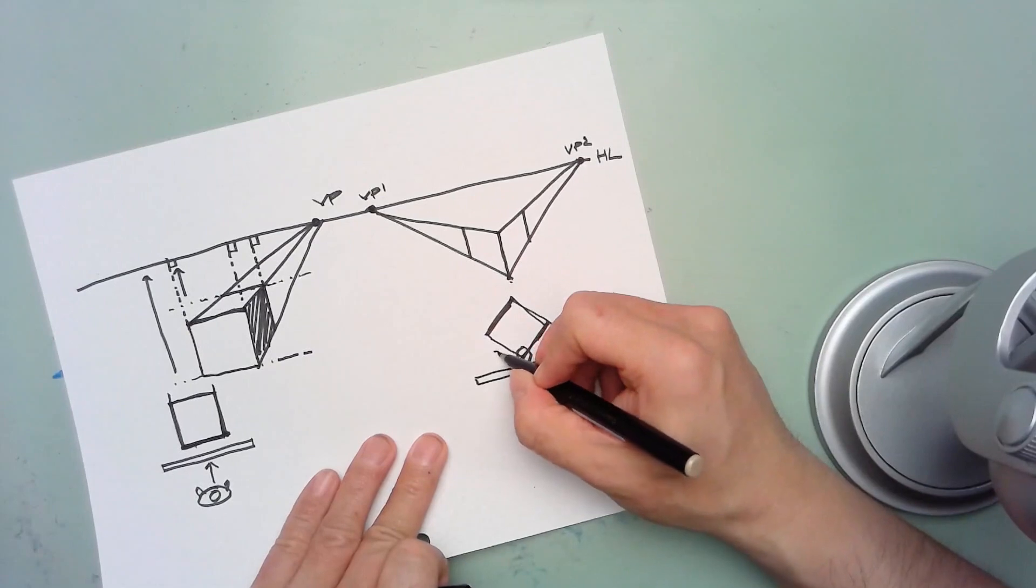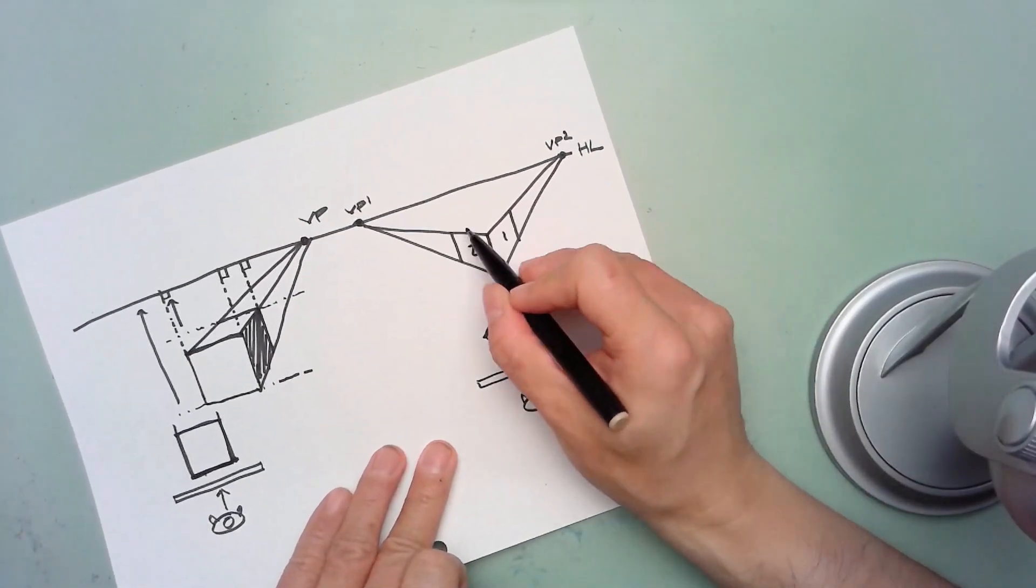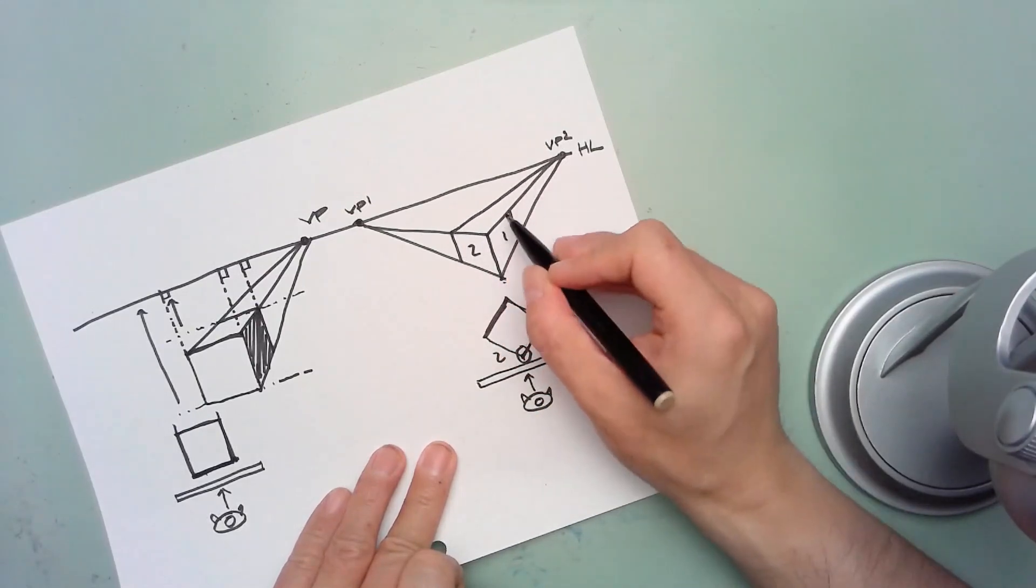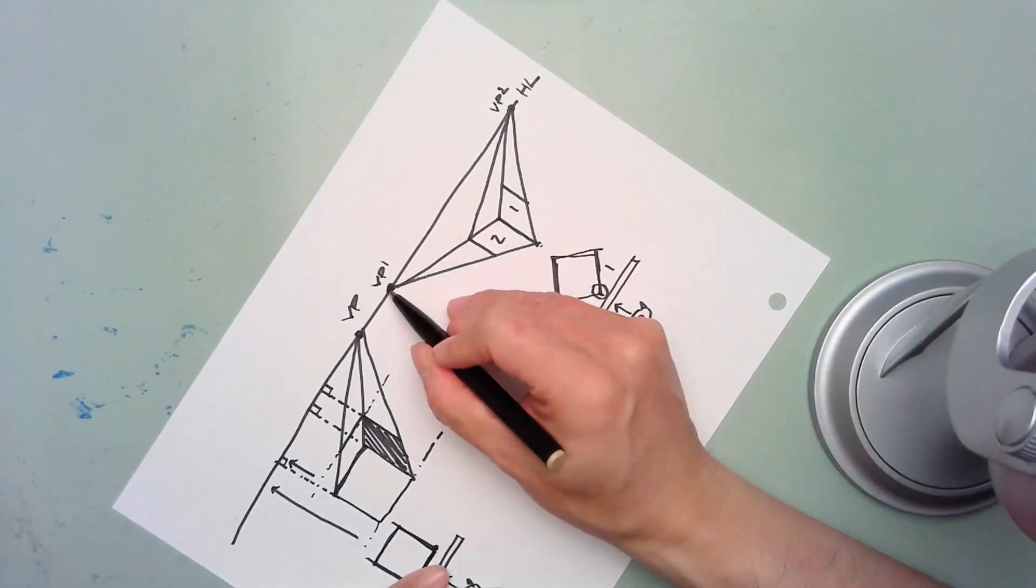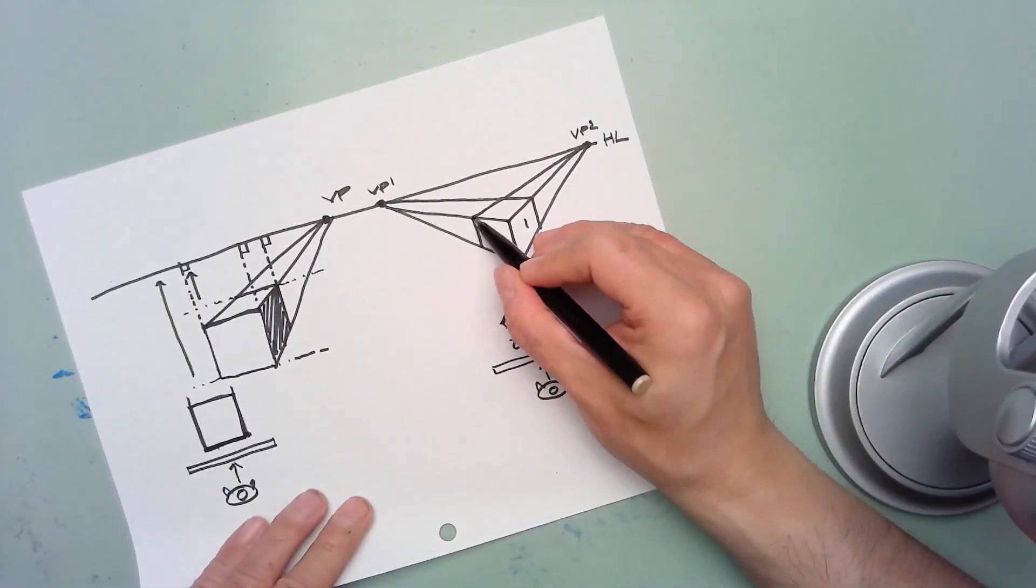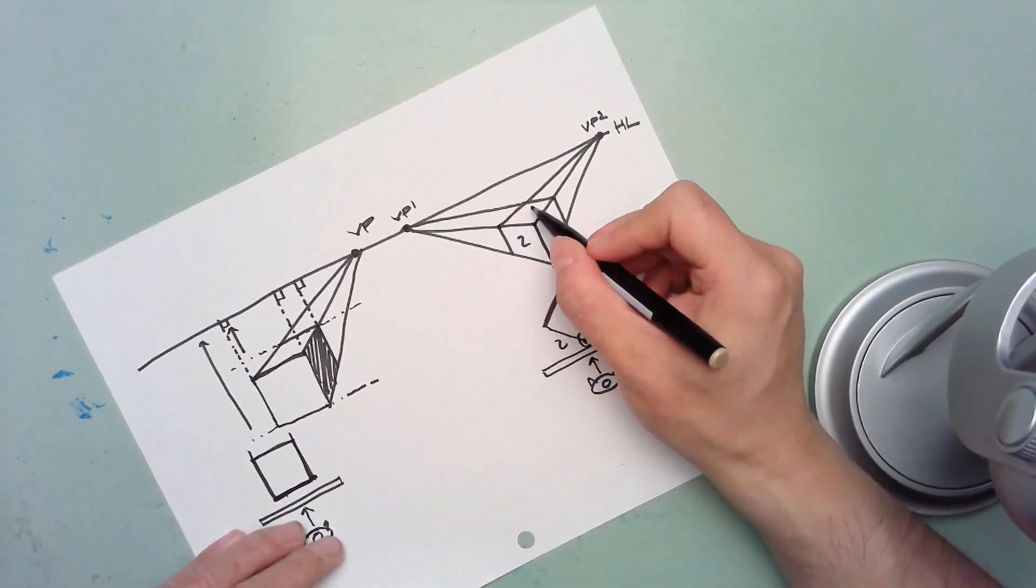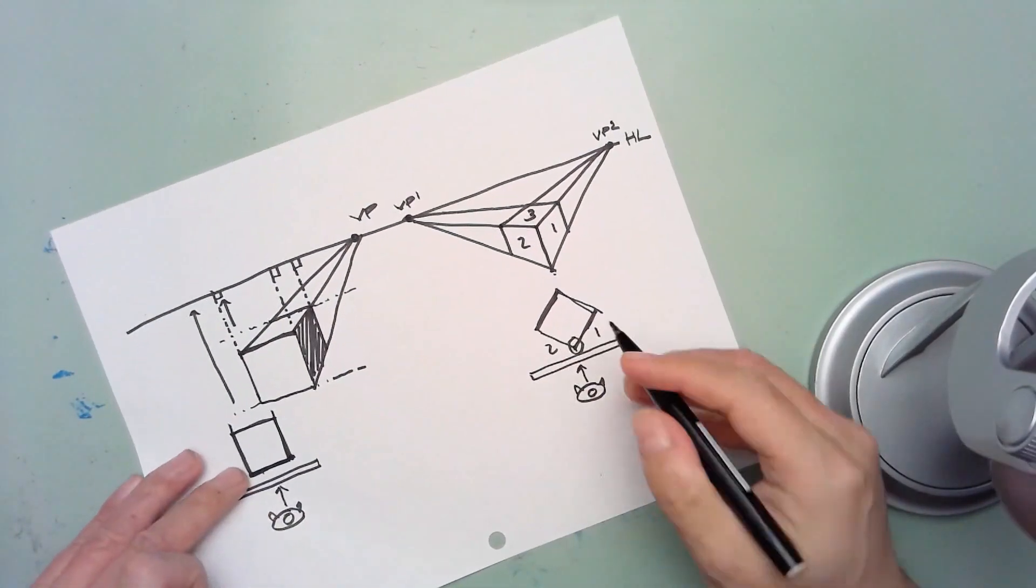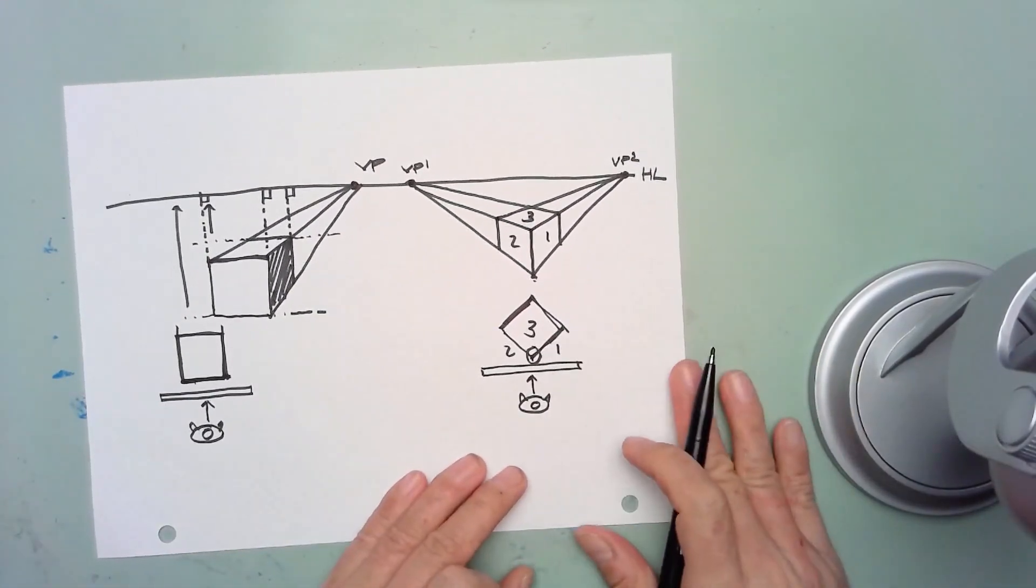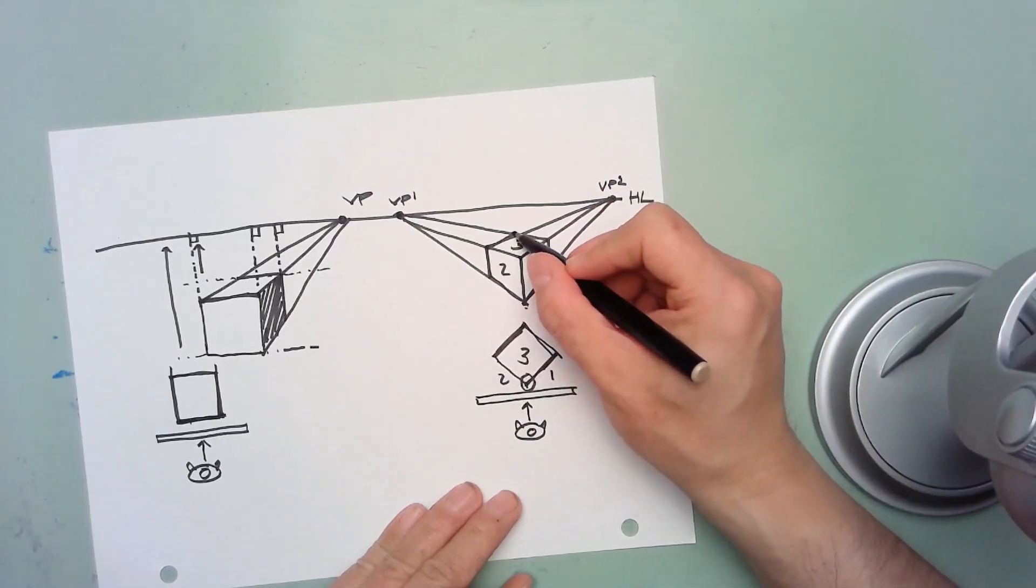So this would be face one, face two, face one, face two. The remaining face, if we're drawing this as a solid, the remaining face on the top just needs to be formed by extending the line from this point here over and extending a line from this point over. That basically gives you the top plane, plane number three, which is basically the one you see from the top view here. So essentially you end up with a two-point perspective cube.